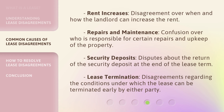Common types of lease disagreements include: Rent increases — disagreement over when and how the landlord can increase the rent. Repairs and maintenance — confusion over who is responsible for certain repairs and upkeep of the property. Security deposits — disputes about the return of the security deposit at the end of the lease term. Lease termination — disagreements regarding the conditions under which the lease can be terminated early by either party.